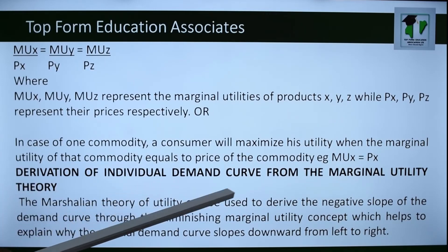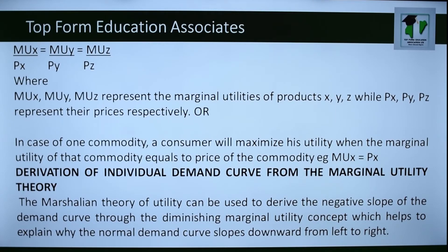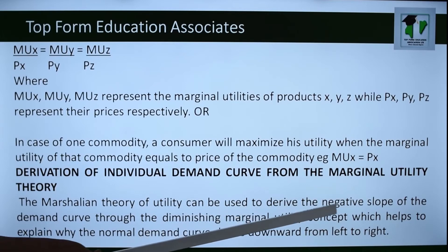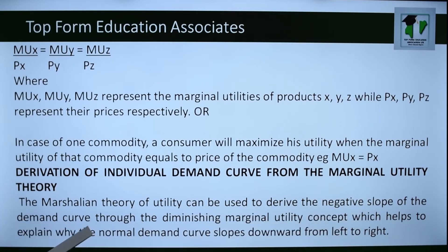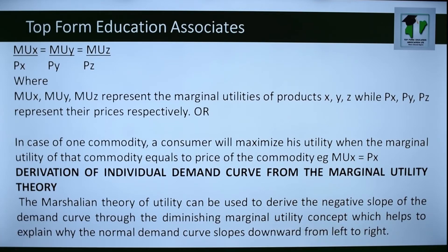We are now looking at the derivation of the individual demand curve from the marginal utility theory. The Marshallian theory of utility can be used to derive the negative slope of the demand curve through the diminishing marginal utility concept, which explains why the normal demand curve slopes downwards from left to right.